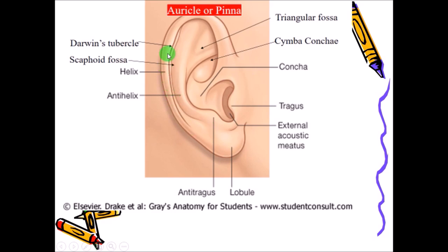Going above, the auricle is made up of elastic tissue. This part is called the helix and this is called the anti-helix. In between there is a small space called the scaphoid fossa. On the helix there is a small elevation called Darwin's tubercle. In front there is the triangular fossa, and there is a depression called the cymba concha. These are some important features of the external ear.